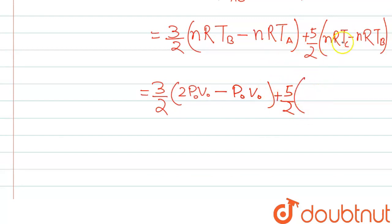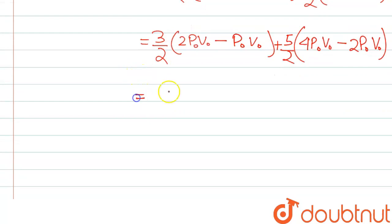Similarly we can write for this one also in terms of P₀V₀. This one will be 4P₀V₀ because the pressure is 2P₀ and volume is 2V₀, so this will be 4P₀V₀ minus 2P₀V₀. At B the pressure is 2P₀.